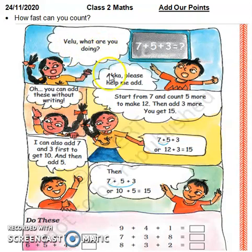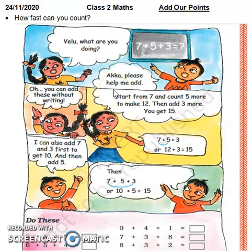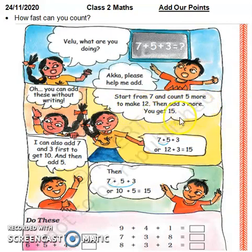Please help me add. This girl and this girl, whose name is Velu, are both brothers and sisters. This girl asks the other: what are you doing? Please help me add. She says: you can add this without writing — start from 7 and count 5 more to make 12, then add 3 more, you get 15. 7 plus 5 plus 3, or 12 plus 3, is equal to 15.